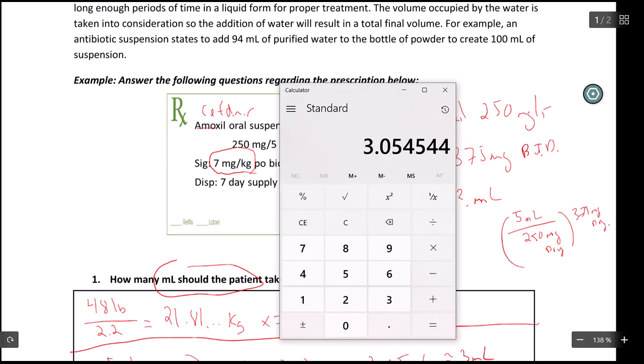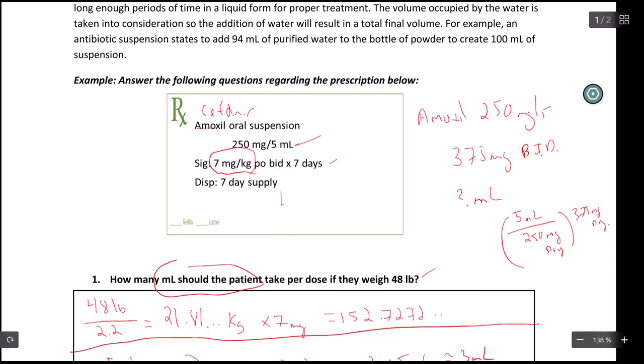So in that case, I take five, divide that by 250 times it by 375. And I'm left with 7.5 mLs. So this would be 7.5 mLs.